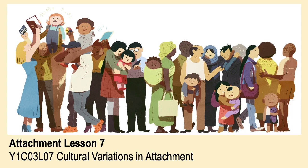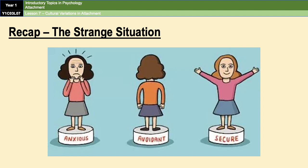Hello everyone and welcome to attachment lesson 7: cultural variations in attachment. This lesson follows on directly from the strange situation. Ainsworth discovered in her research that there were three different attachment types: secure, insecure avoidant, and insecure resistant. She also found that secure was the most common and resistant was the least common, and those differences were essentially put down to different parenting styles and techniques.